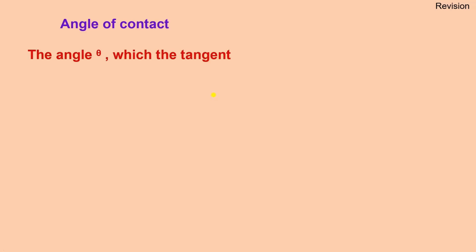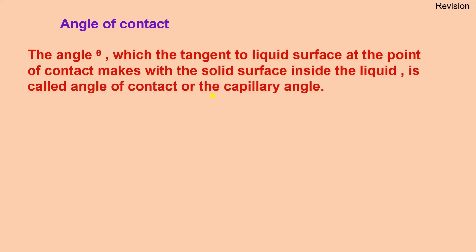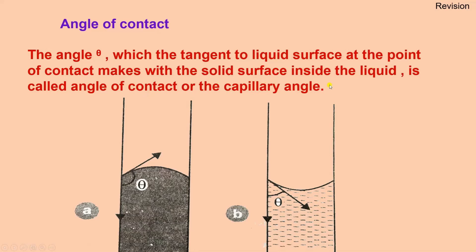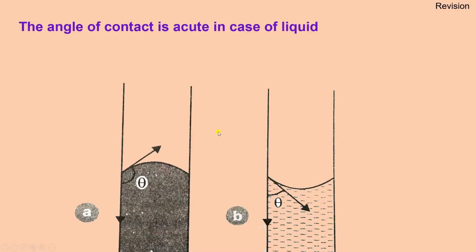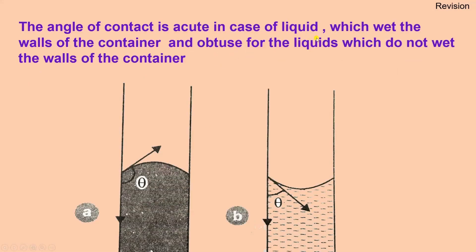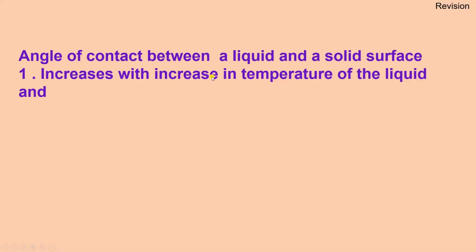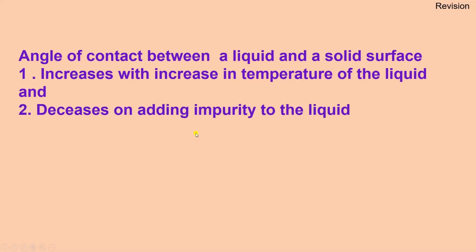We have discussed the angle of contact. The angle of contact is the angle which the tangent to the liquid surface at the point of contact makes with the solid surface inside the liquid. Angle of contact is acute for liquids which wet the wall of the container, and obtuse for liquids which do not wet the wall. It increases with increase in temperature and decreases on adding impurities.